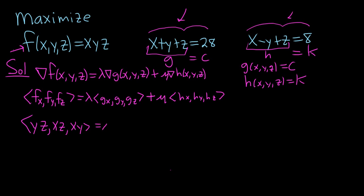This is equal to lambda. The situation is really easy for g. The partial derivative of g with respect to x is 1, the other derivatives will be 0. gy is also 1, and then gz is also 1 as well. Plus mu, hx is 1, hy is negative 1, and then the last one is 1.